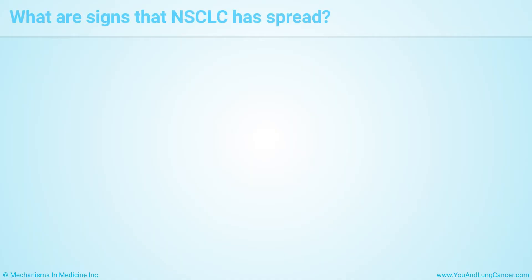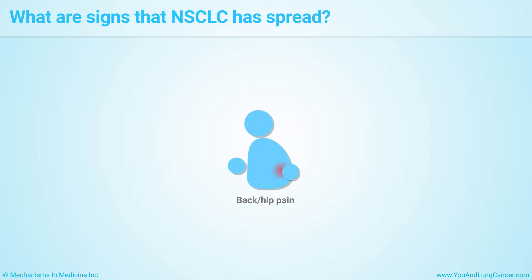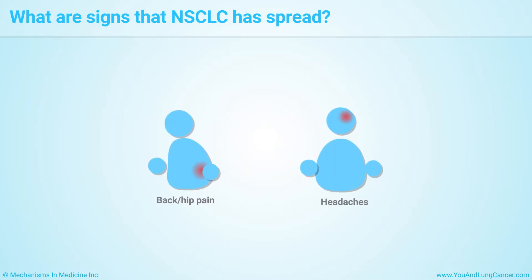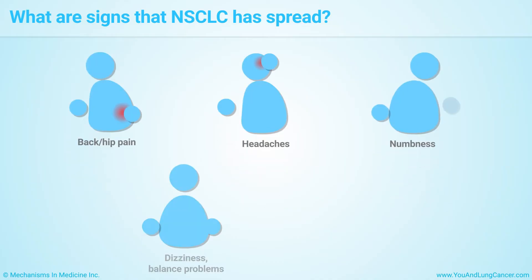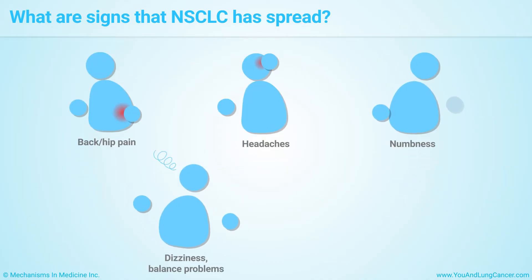Symptoms that Non-Small Cell Lung Cancer has spread to other organs include: pain in the back or hips if it's in those bones, headaches, weak or numb arm or leg, dizziness, balance problems, and seizures if it's in the brain or spinal cord.